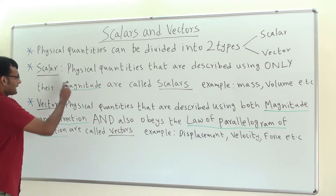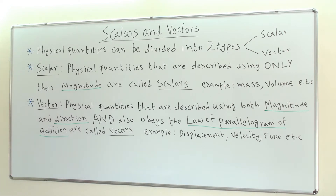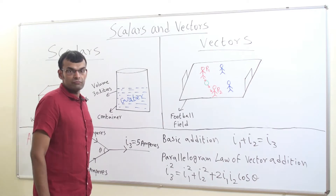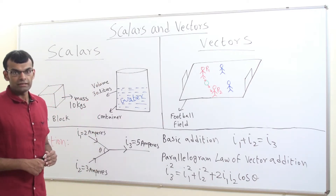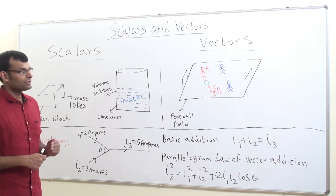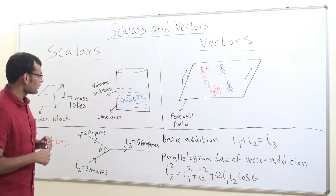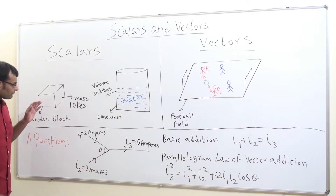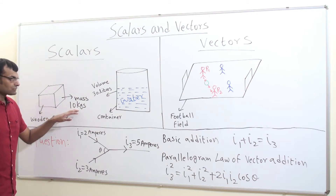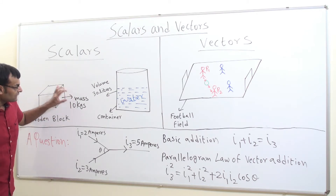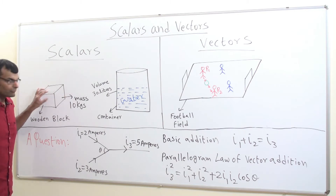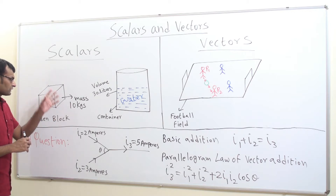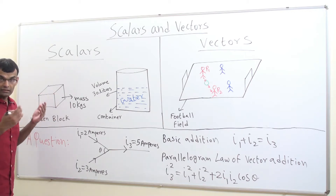Let's discuss scalars and vectors in detail. The definition of a scalar states that a physical quantity described using only its magnitude is called a scalar quantity. For example, here I am representing a wooden block with 10 kg. This 10 kg indicates the mass of the wooden block — it is a magnitude, a value, and there are no directional components present.